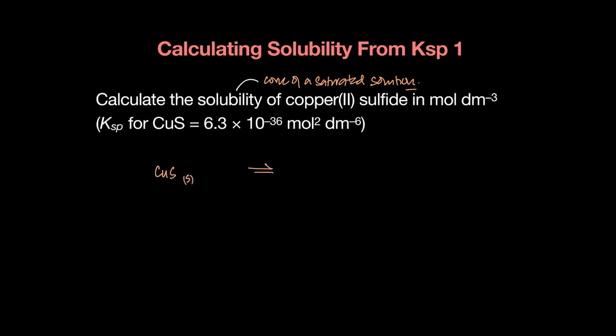You first write the equation for the guy whose KSP they have given—that's a solid they want. So copper sulfide becoming copper and sulfide. In this case, the ratio is one is to one.